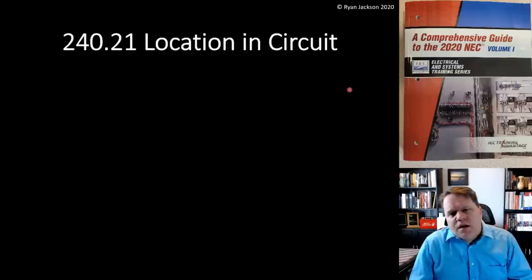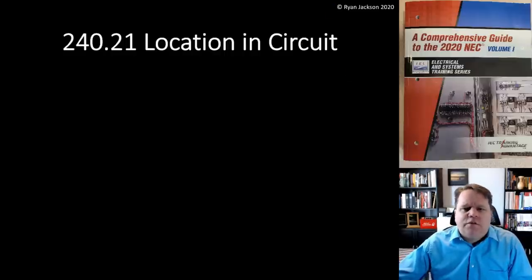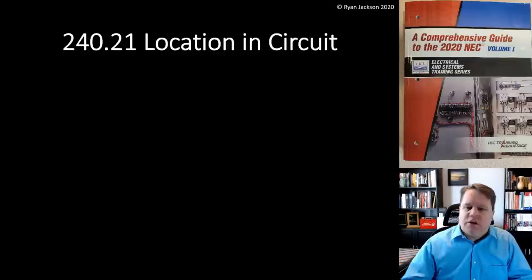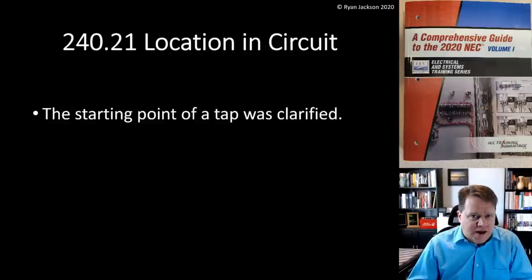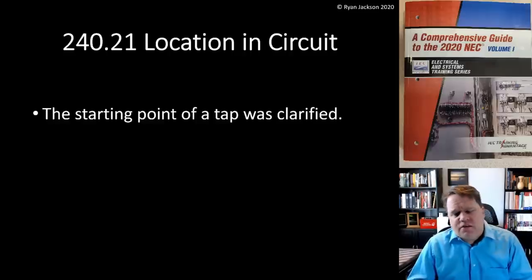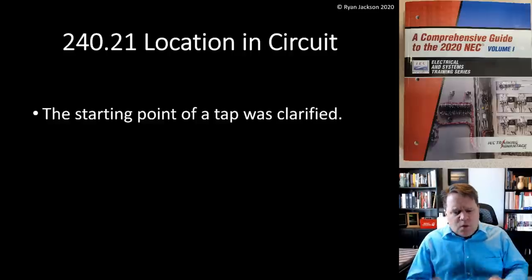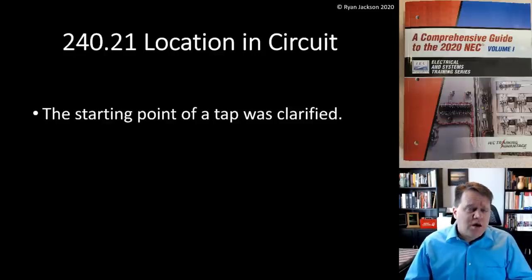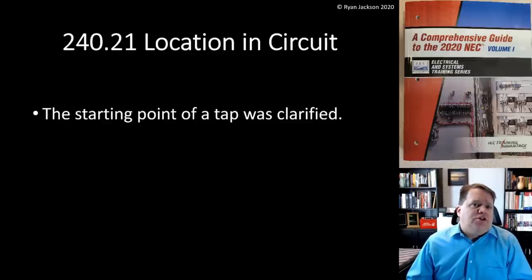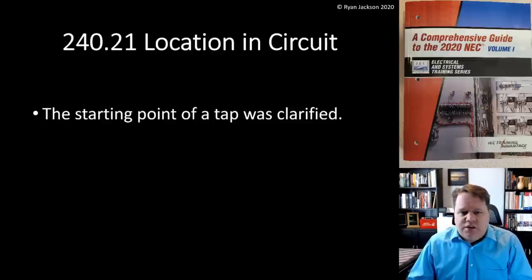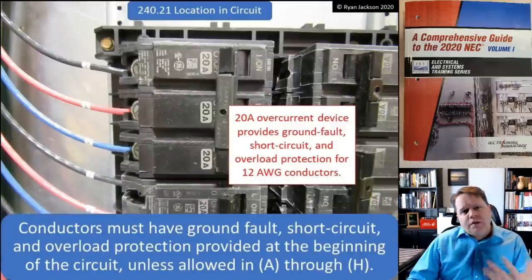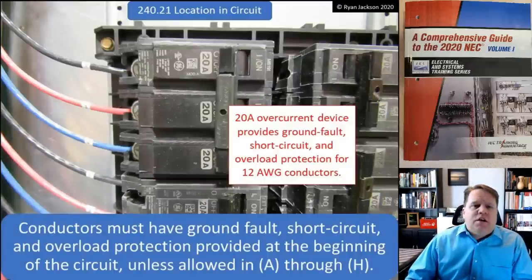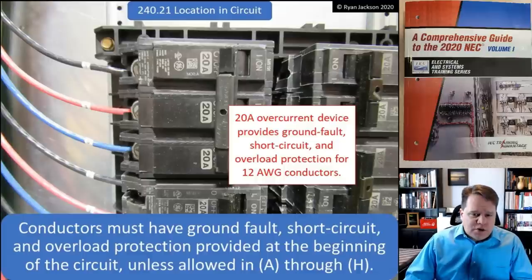The next change is 240.21, Location in Circuit, relating to feeder taps. The starting point of a tap was clarified — this is more of a clarification than a technical change. Section 240.21 states that conductors must have ground fault, short circuit, and overload protection provided at the beginning of the circuit, unless allowed under items A through H.